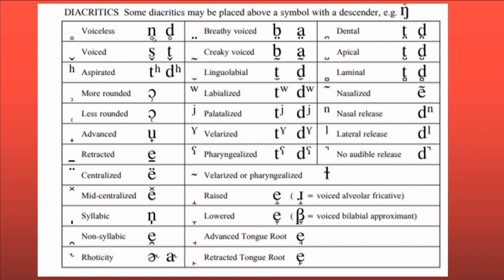The IPA also includes diacritics — small marks placed above or below a symbol to show allophonic variation. For example, a diacritic under N shows it is a syllabic sound, meaning a consonant that forms a syllable on its own with the vowel only implied. Another diacritic shows no audible release, as we saw in 'stop' with the unreleased plosive. All these marks are used to represent the allophones of different languages.